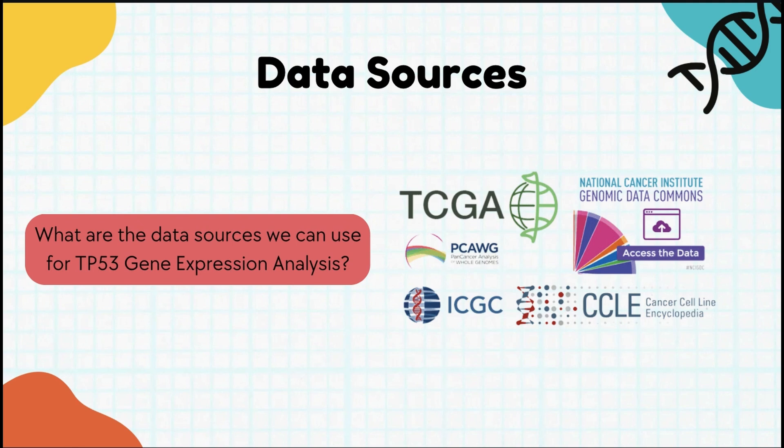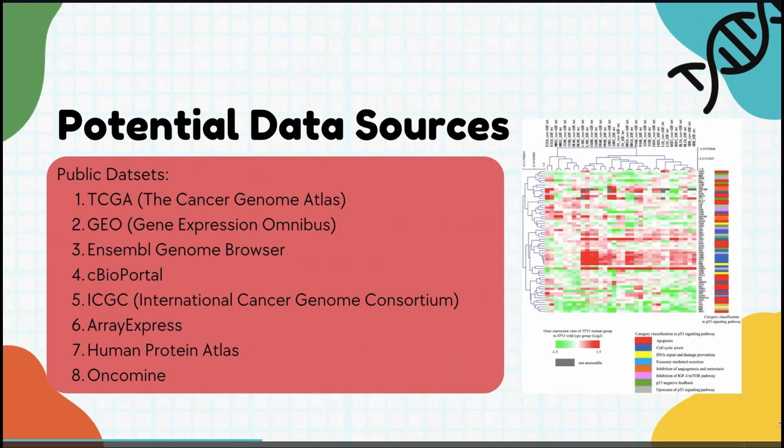Now before we dive into our environment, let's look at some of the most reliable data sources you can use for gene expression analysis — these are gold mines for bioinformatics research. First, we have the TCGA, the Cancer Genome Atlas, which is a massive database offering gene expression, mutation, and clinical data for multiple cancer types, including lung cancer.